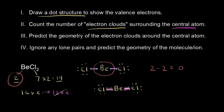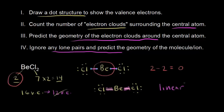Those two electron clouds are furthest apart when they point in opposite directions. So the geometry of the electron clouds around the central atom gives a linear shape. This molecule is linear because we don't have any lone pairs on the central atom to worry about. We predict the geometry of the molecule as linear, with a bond angle between chlorine, beryllium, and the other chlorine of 180 degrees — just a straight line. That's how to use VSEPR to predict the shape.